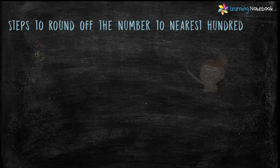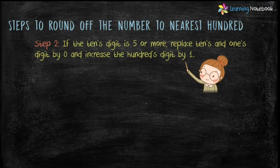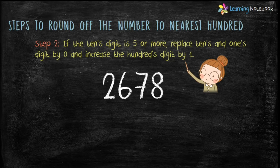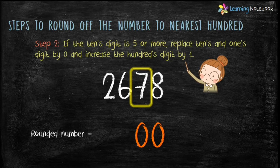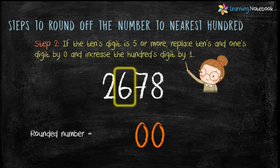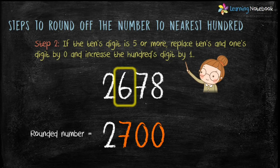Step 2: if the tens digit is 5 or more, replace the tens and ones digits by 0 and increase the hundreds digit by 1. For example, 2678 — here the tens digit is 7, which is greater than 5. So first replace 7 and 8 by 0, then increase the hundreds digit, which is 6, by 1 — 6 plus 1 equals 7. Keep the remaining digits as they are. Therefore the rounded number is 2700.